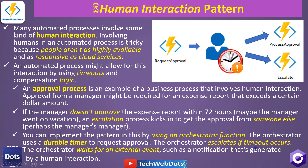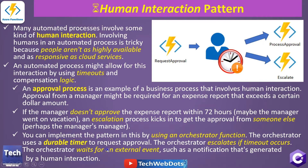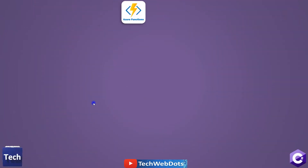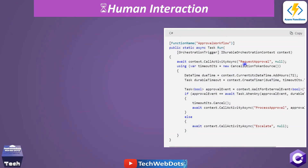The orchestrator escalates if a timeout occurs. Very importantly, the orchestrator waits for an external event — such as a notification generated by a human interaction. It seems very exciting, and we will discuss each thing step by step, looking at how our function will look like.